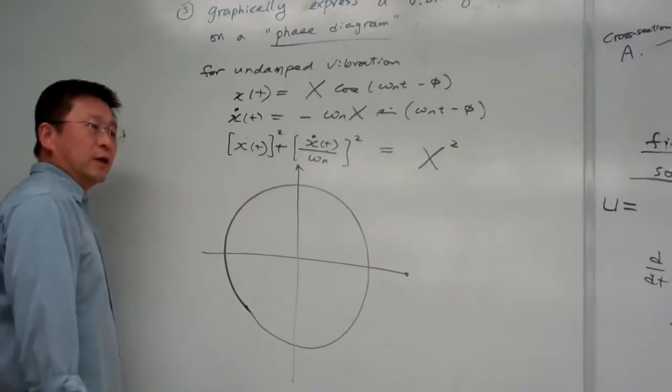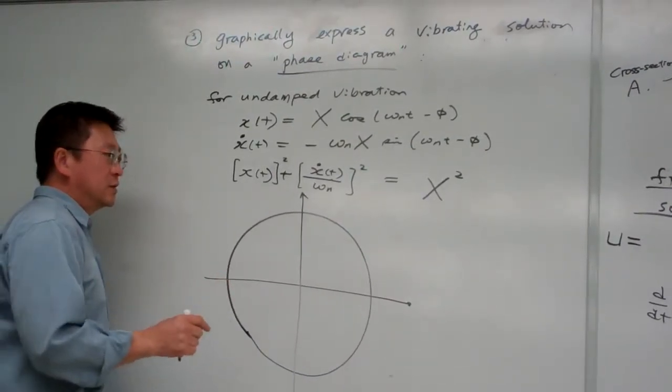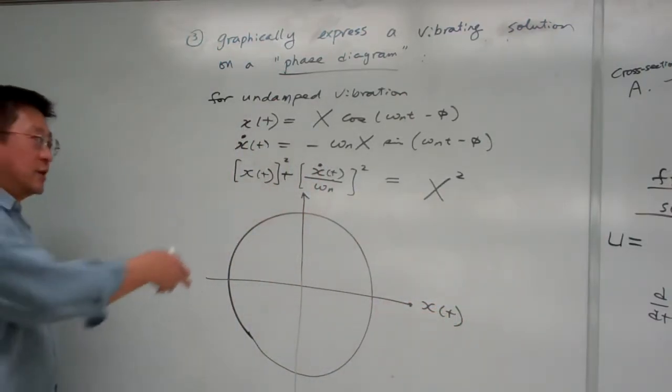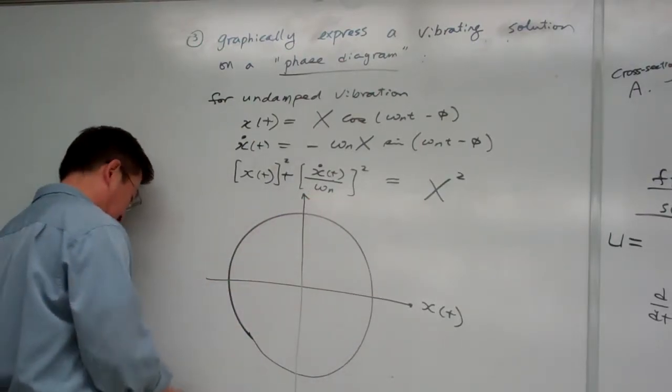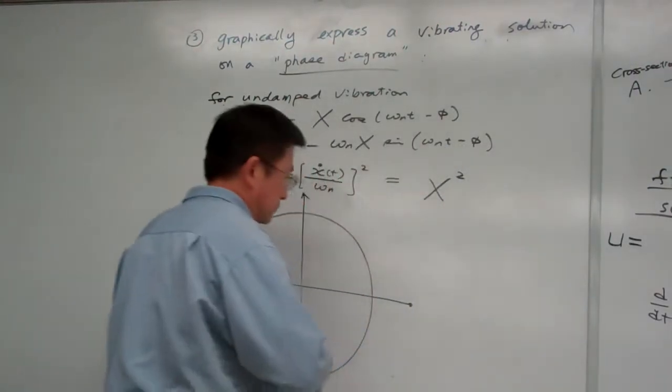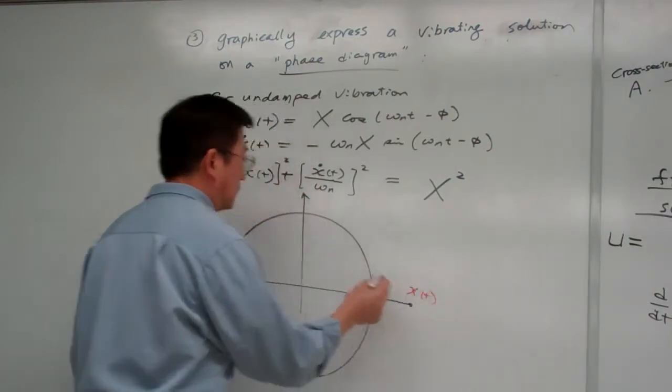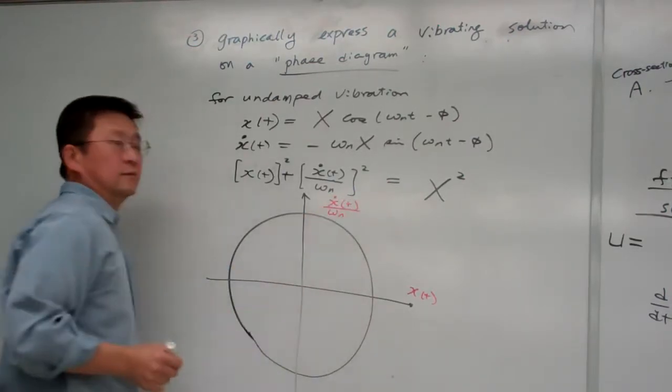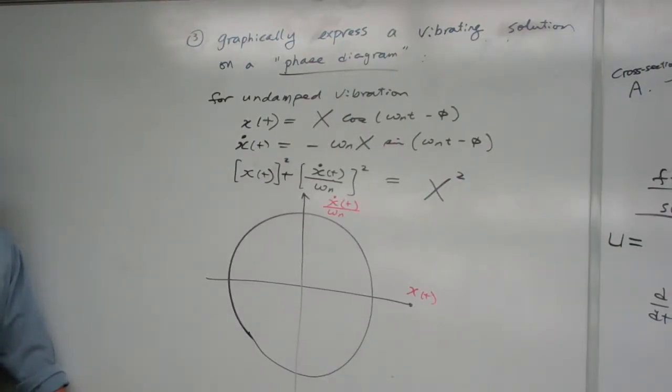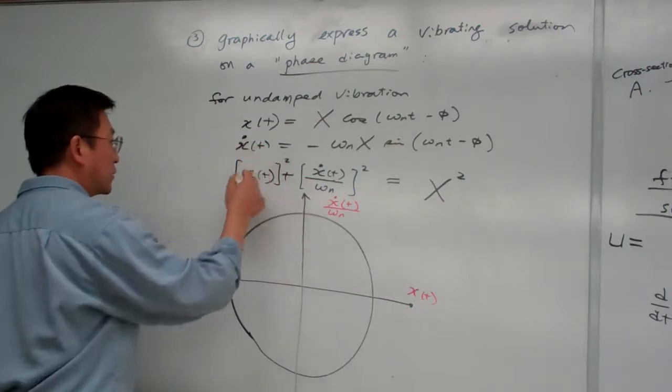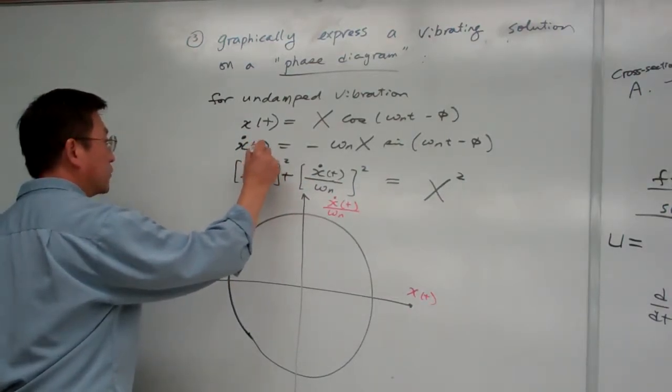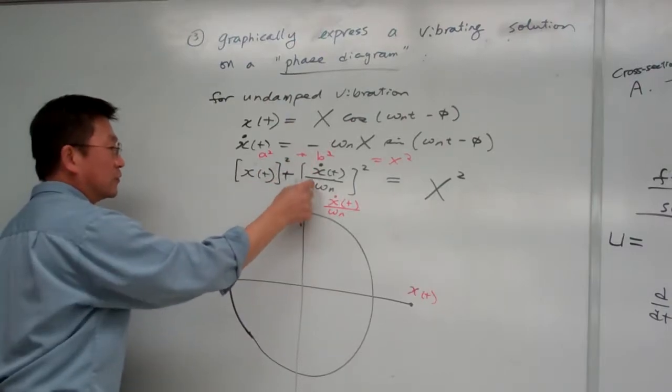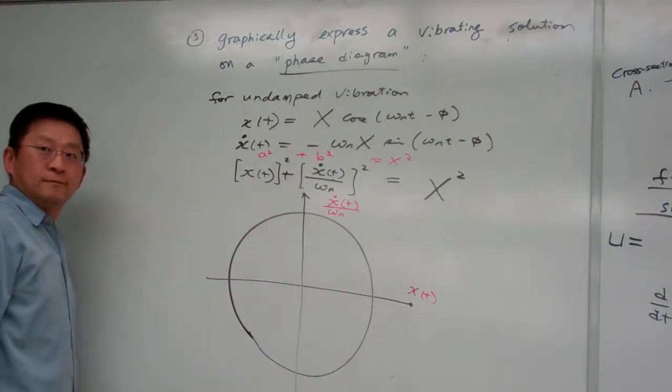The circle is drawn in terms of the two coordinates. One coordinate is using x, t. The other coordinate using velocity. This is x, t dot velocity, and divided by omega n. You can see, basically, this one equation is equivalent to a squared plus b squared equal to x squared. Right? So basically, a equal to x, b equal to this one, and we simply draw on here.